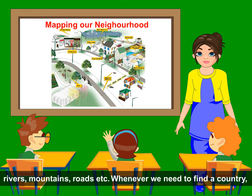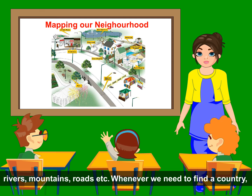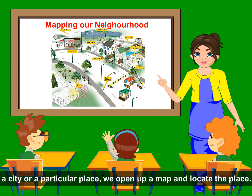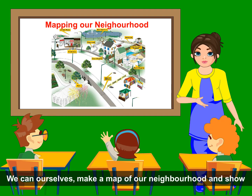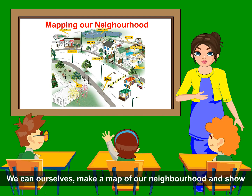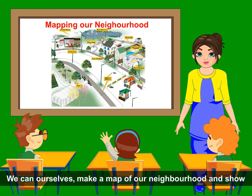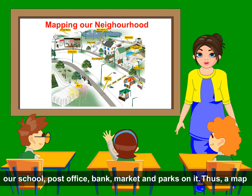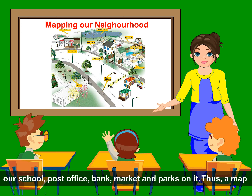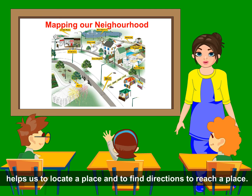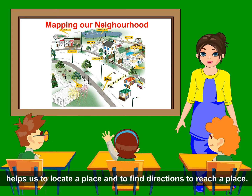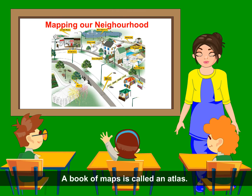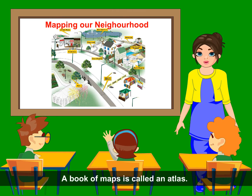Whenever we need to find a country, a city or a particular place, we open up a map and locate the place. We can ourselves make a map of our neighborhood and show our school, post office, bank, market and parks on it. Thus a map helps us to locate a place and to find directions to reach a place. A book of maps is called an atlas.